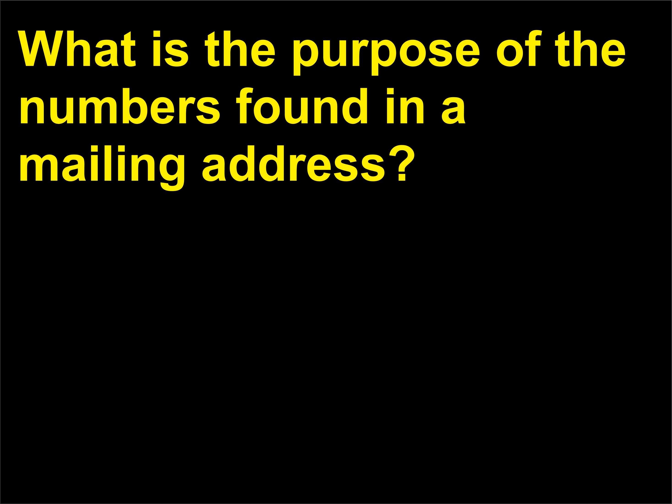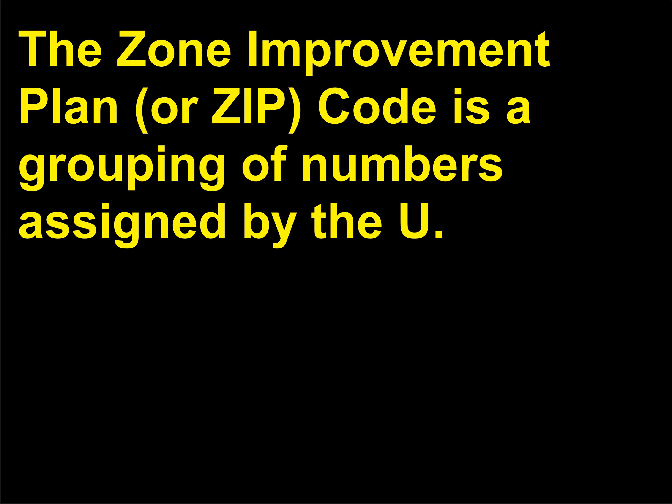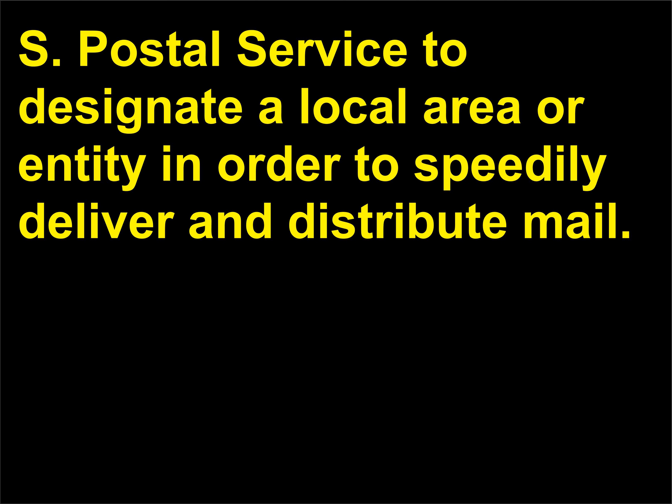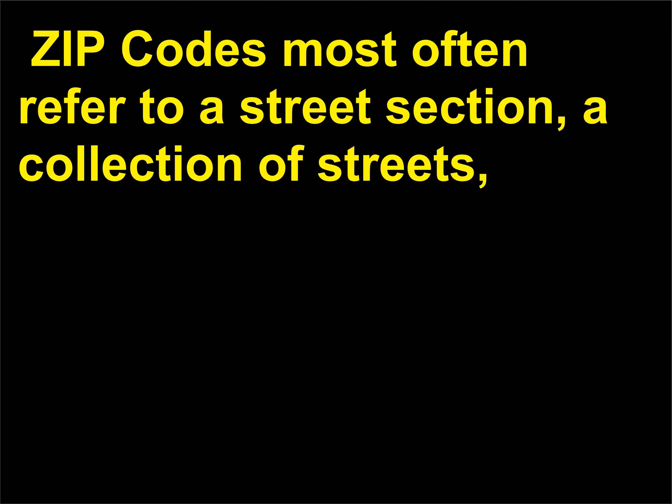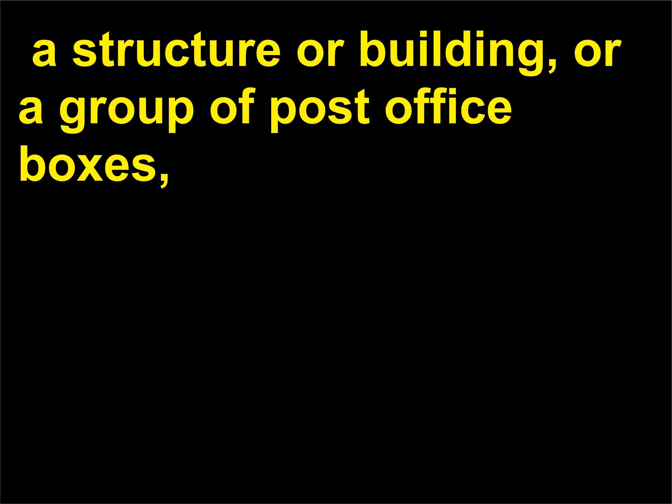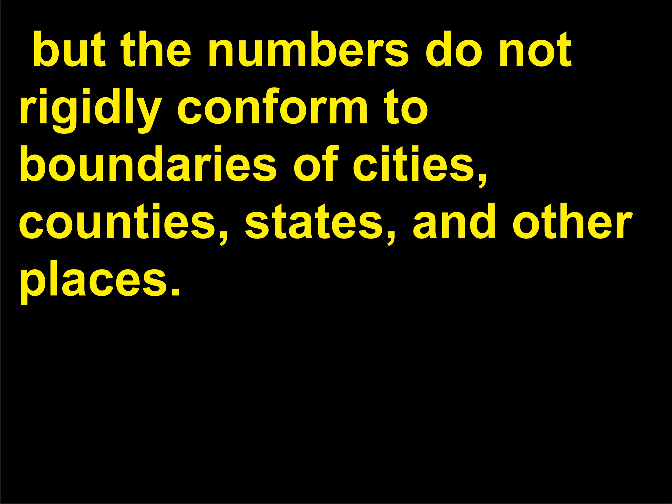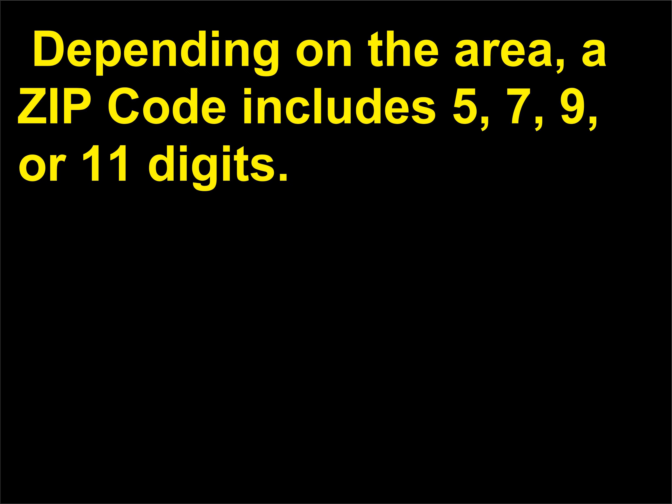What is the purpose of the numbers found in a mailing address? The Zone Improvement Plan, or ZIP, code is a grouping of numbers assigned by the U.S. Postal Service to designate a local area or entity in order to speedily deliver and distribute mail. ZIP codes most often refer to a street section, a collection of streets, a structure or building, or a group of post office boxes. But the numbers do not rigidly conform to boundaries of cities, counties, states, and other places. Depending on the area, a ZIP code includes 5, 7, 9, or 11 digits.